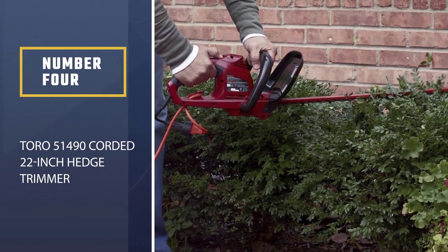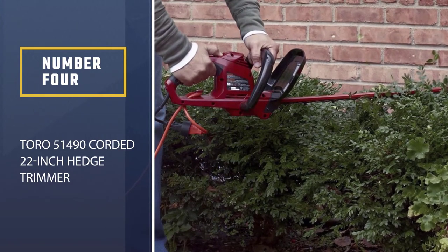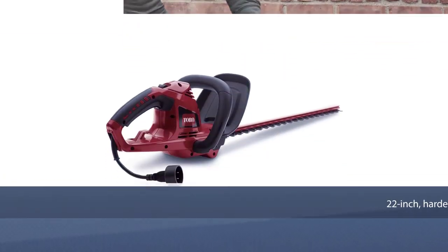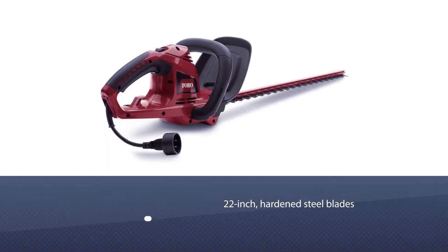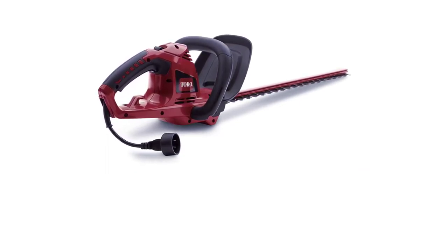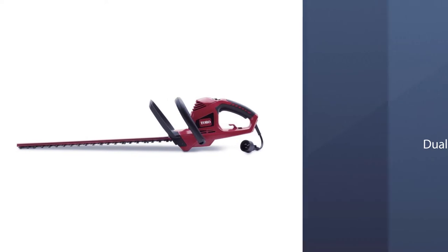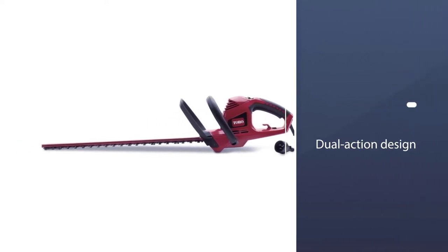Number four: Toro 51490 corded 22-inch hedge trimmer, best for trimming tasks within reach of an outlet. The corded Toro 51490 has 22-inch hardened steel blades that are always up for the challenge of cutting through twigs, branches, and leaves, and they do so flawlessly.